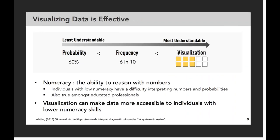A lot of research in medical risk communication has shown that people have difficulty reasoning with numeric data. Numeracy is the way we describe this reasoning with numbers. Studies, particularly in medical risk communication, have shown that individuals with low numeracy have a hard time interpreting numbers, and low numeracy can affect as much as half of the population — even among educated professionals. What the research community has found is that giving somebody a probability is often the most difficult, least understandable way to give information. Showing it as a frequency, for example 6 in 10 as opposed to 60%, improves comprehension. But showing a data visualization often tends to be the most effective.